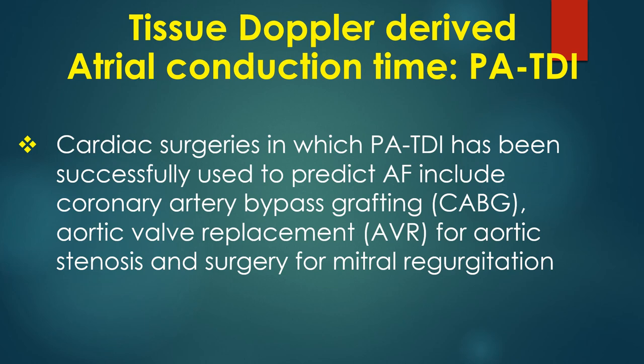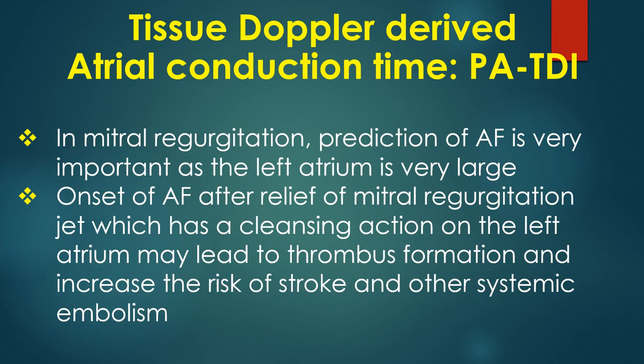PA-TDI has also been used to predict AF after acute myocardial infarction and after cardiac surgery. Cardiac surgeries in which PA-TDI has been successfully used include coronary artery bypass grafting, aortic valve replacement for aortic stenosis, and surgery for mitral regurgitation. In mitral regurgitation, prediction of AF is very important as the left atrium is very large. Onset of AF after relief of the mitral regurgitation jet — which had a cleansing action on the left atrium — may lead to thrombus formation and increase the risk of stroke and other systemic embolism.